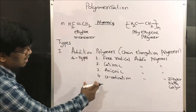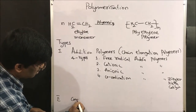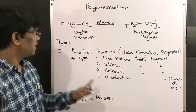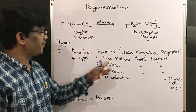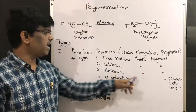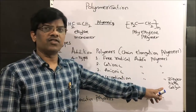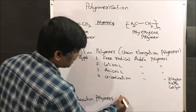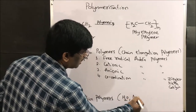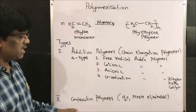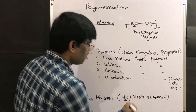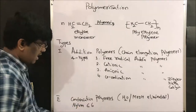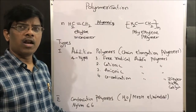The second type is condensation polymers. So polymers are of two types: addition polymers and condensation polymers. Under addition polymers we have four types. For condensation polymers, water, methanol, or some other byproducts are eliminated during the reaction. Under condensation polymers, we are going to learn about nylon 66, which is a biodegradable polymer.